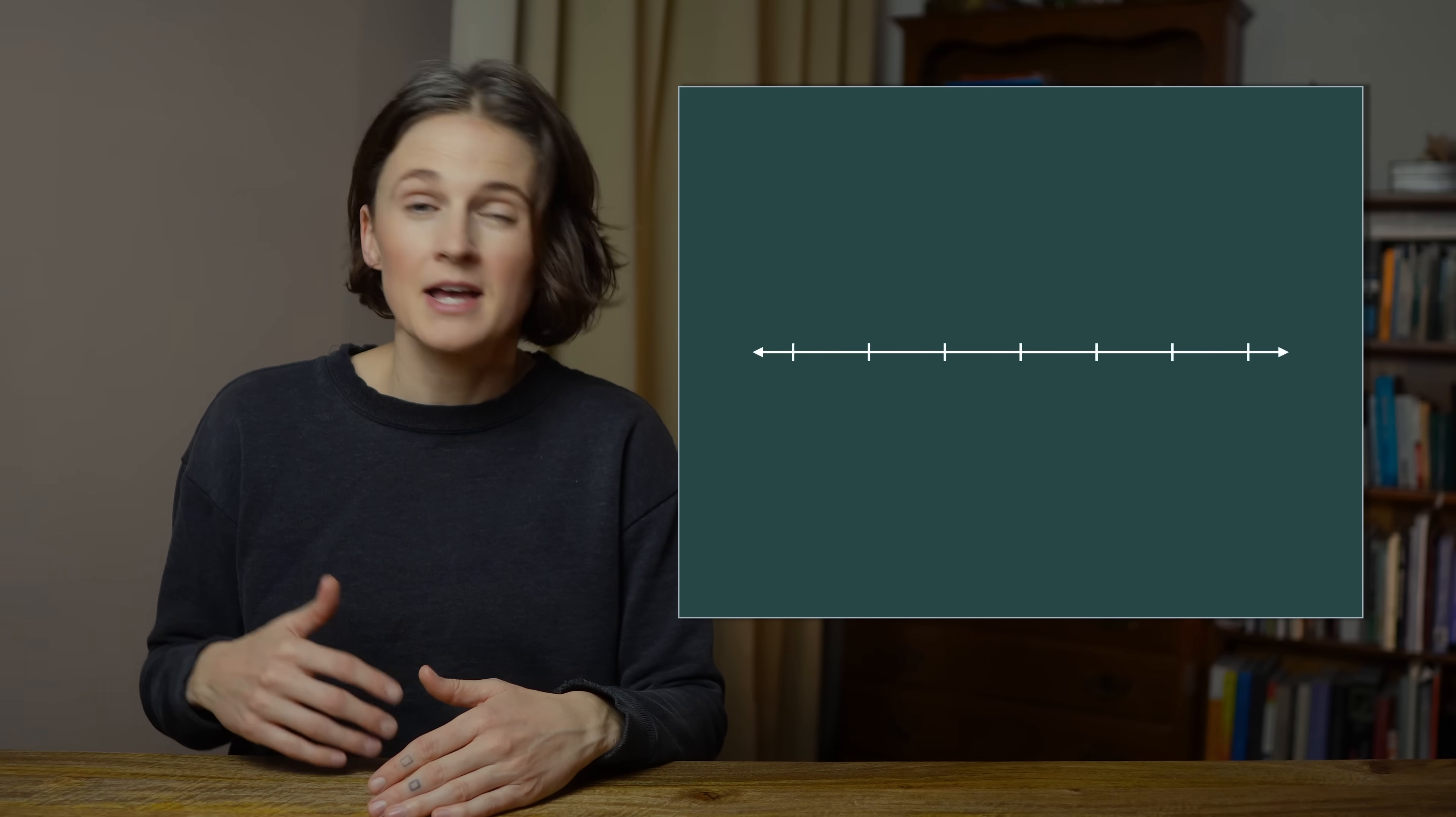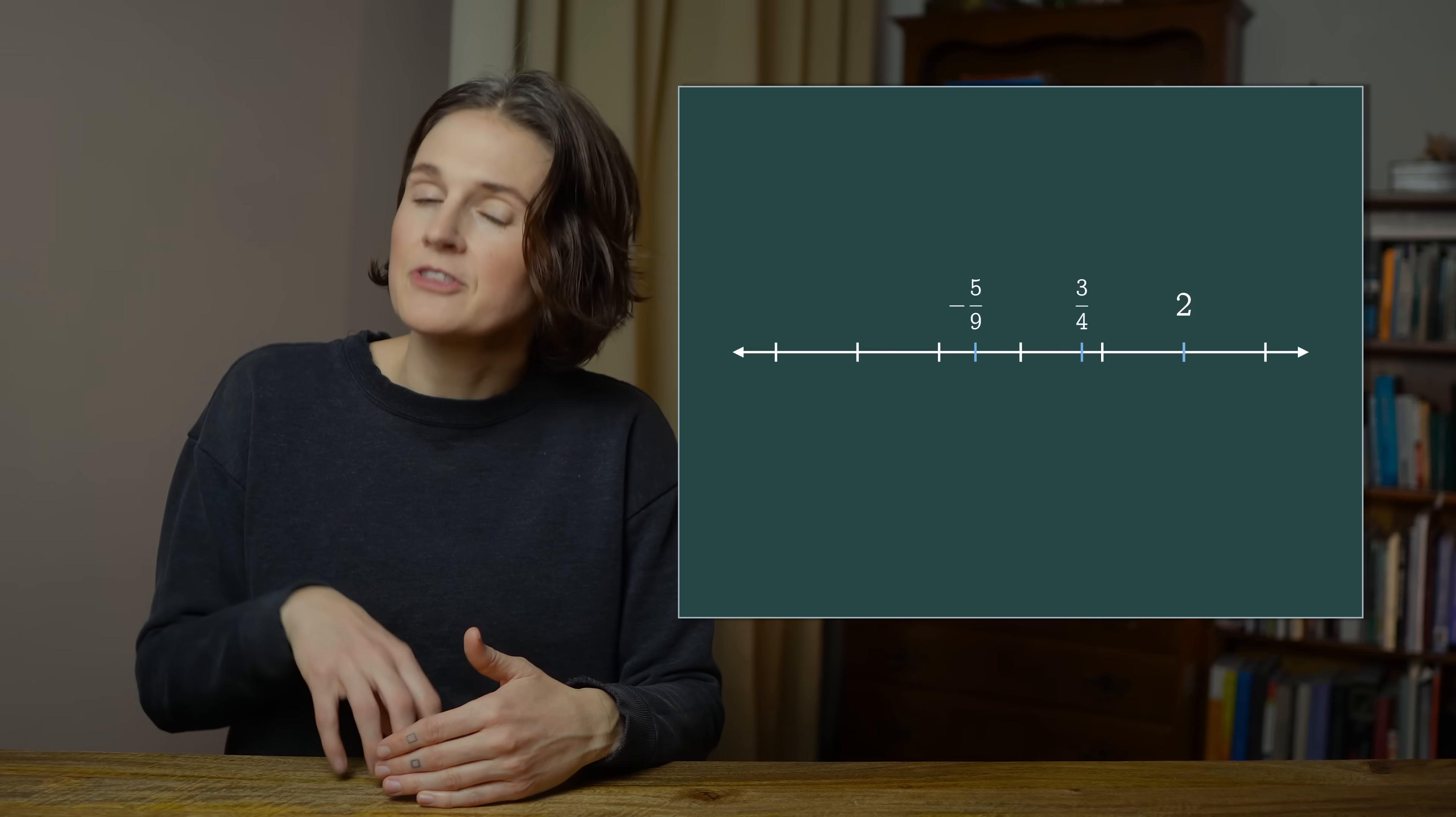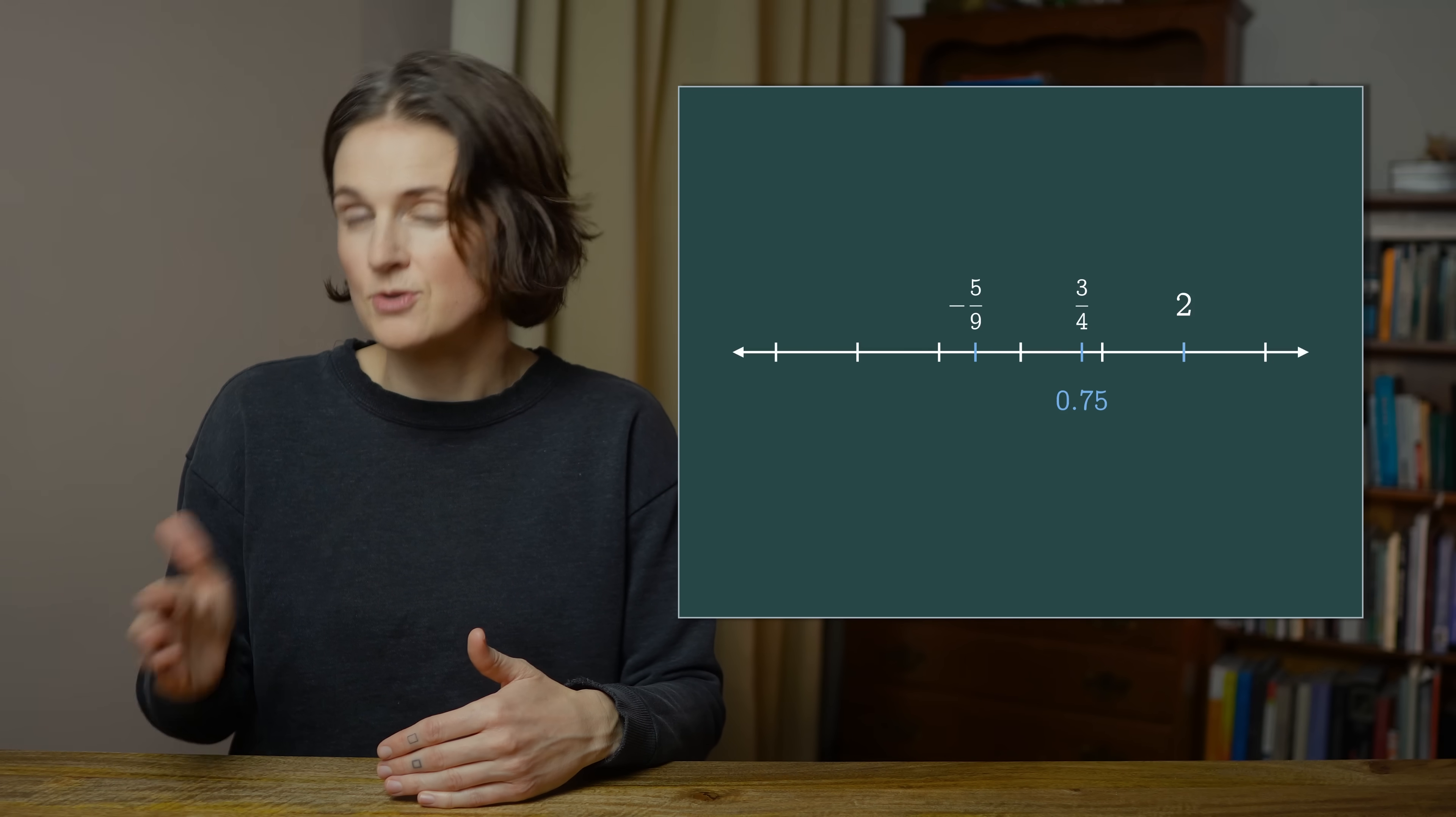The name rational numbers makes them sound pretty rational, meaning sensible, reasonable. But they're actually quite strange. Rational numbers are just whole numbers divided by whole numbers, like three-quarters or negative five-ninths or two. Unlike the irrational numbers, the decimal expansions either terminate, end, or repeat.